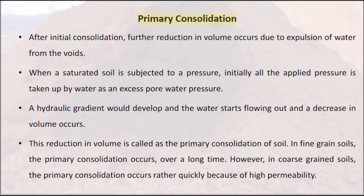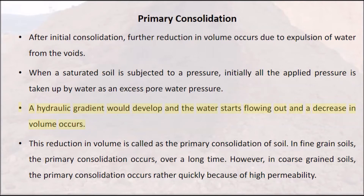Primary consolidation. After initial consolidation, further reduction in volume occurs due to expulsion of water from the voids. When a saturated soil is subjected to a pressure, initially all the applied pressure is taken up by water as an excess pore water pressure. A hydraulic gradient would develop, the water starts flowing out, and a decrease in volume occurs. This reduction in volume is called the primary consolidation of soil. In fine-grained soils, the primary consolidation occurs over a long time. However, in coarse-grained soils, the primary consolidation occurs rather quickly because of high permeability.